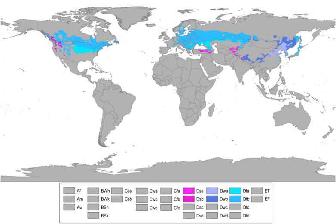In the Southern Hemisphere, the cool summer subtype exists in well-defined areas only in the Southern Alps of New Zealand, the Snowy Mountains of Australia (Kiandra, New South Wales), and as isolated microclimates of the Southern Andes of Chile and Argentina.